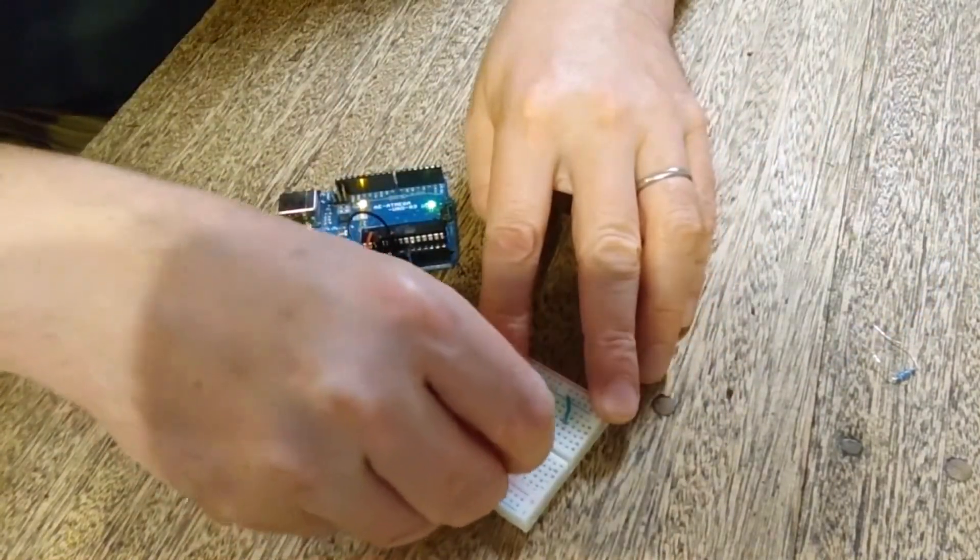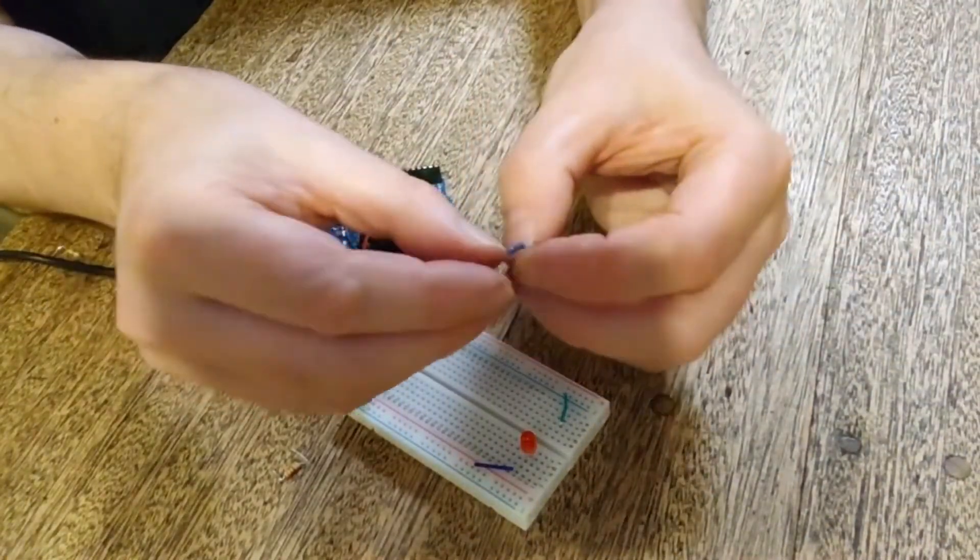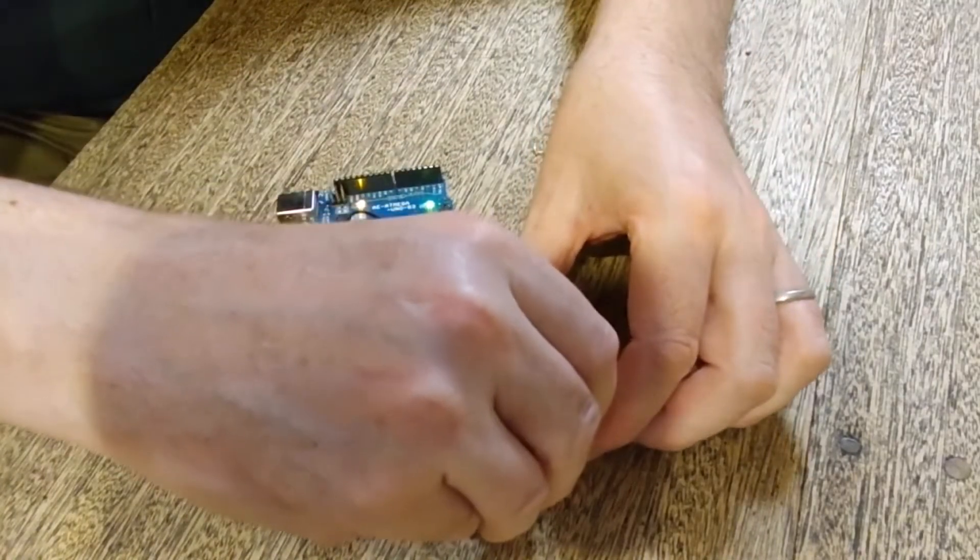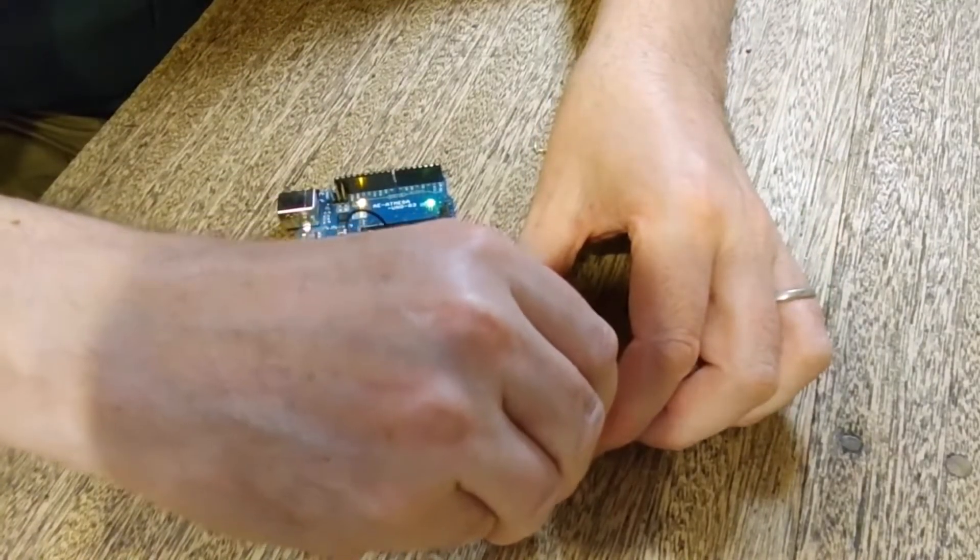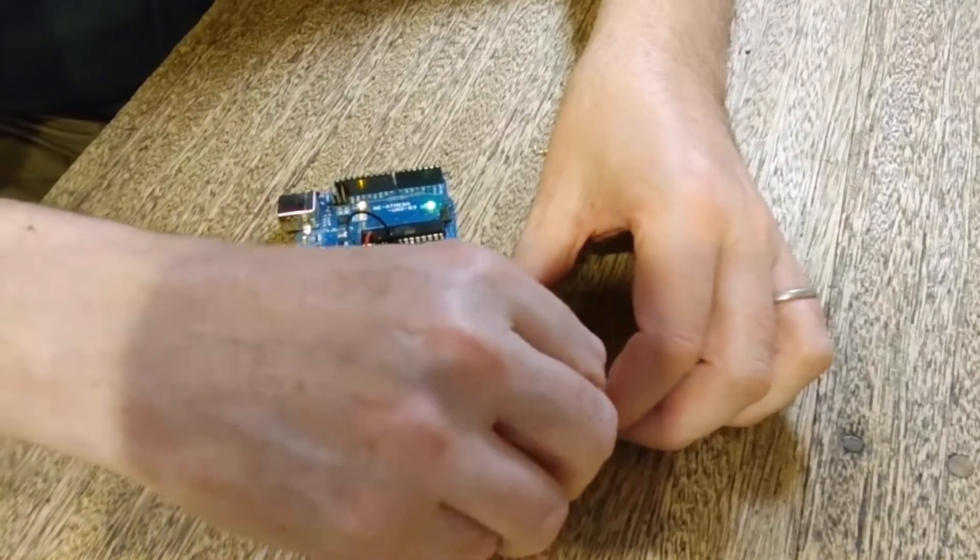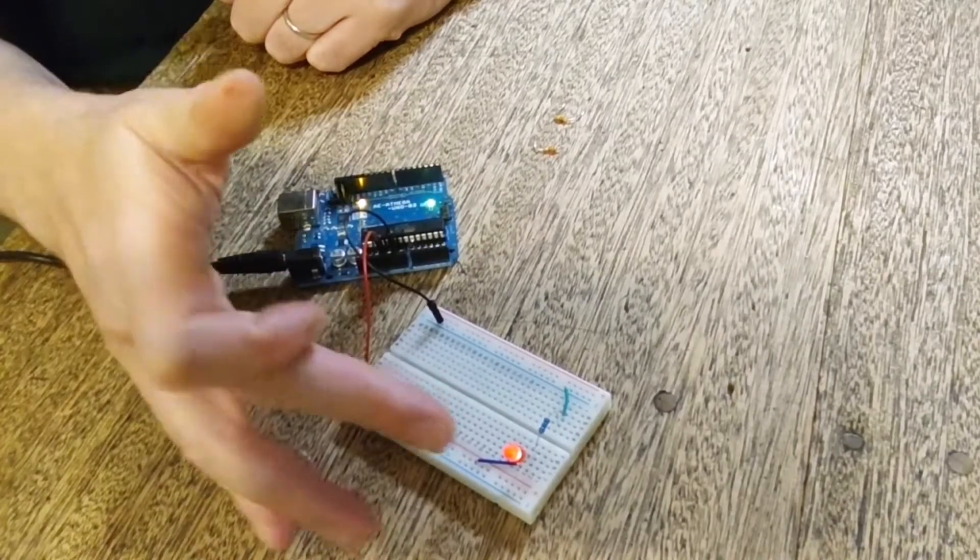So stick that into there, across there. I've got a resistor now, I think that's about 10K, that's quite a big resistor, and I'm going to put that in as we're doing this. Stick that in there, and you can see the LED has come on. It's not very bright, but it's on.